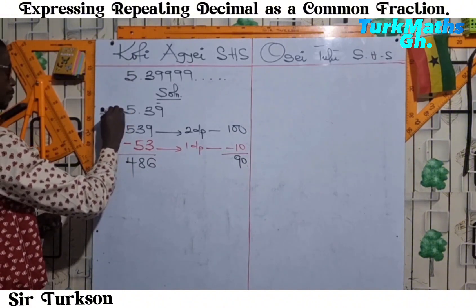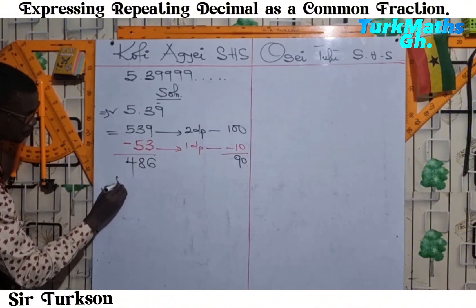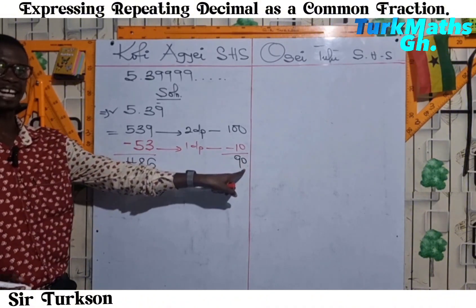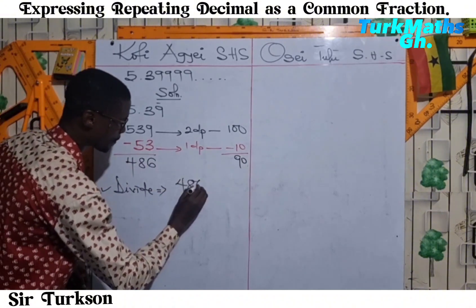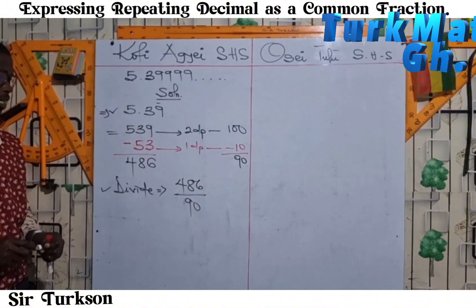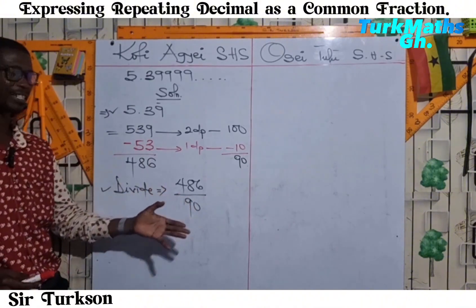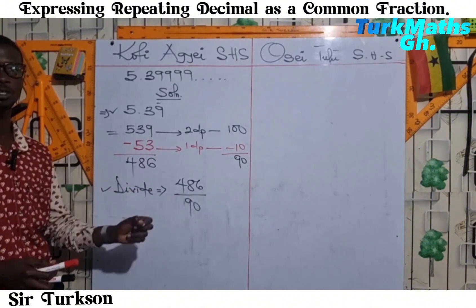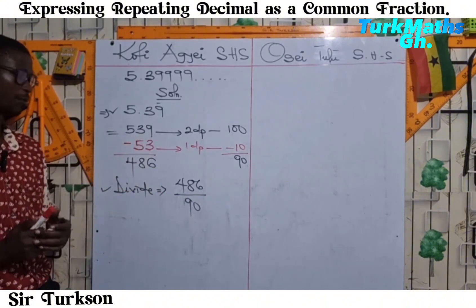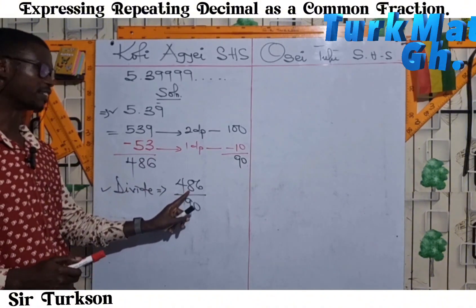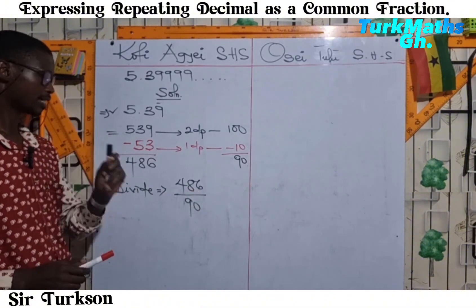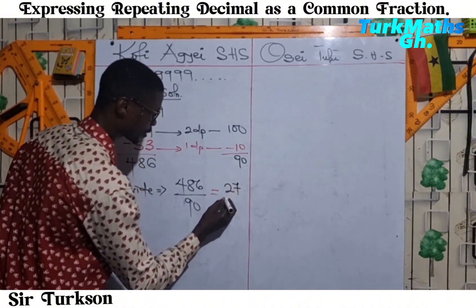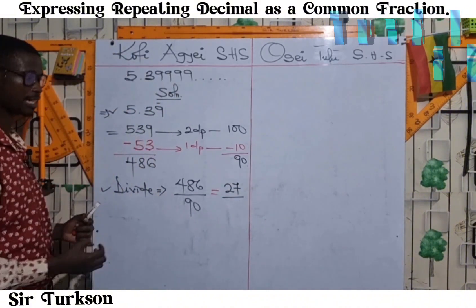100 minus 10 gives us 90. Now the second step — we are going to divide 486 by 90. Which numbers can you use to simplify this without any remainder? You can use 2, 3, 6. I think I can use 18. Let me check: 4 plus 8 gives 12, plus 6 gives 18 — yes, 18 will do. So 18 divides 486 — that's 27 times. And 18 divides 90 — that is 5 times.